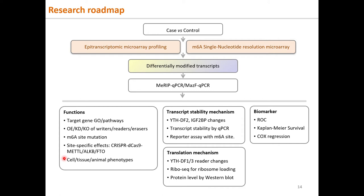For M6A molecular mechanism study, transcript RNA stabilization can be studied by changes in YTHDF2 decay reader or IGF2BP stabilization reader using qPCR or reporter assays as measurements. Translation regulation mechanism can be studied by YTHDF1 or EIF perturbation, ribosome profiling for ribosome loading, and western blot. M6A as biomarkers can be studied by diagnostic ROC curves, Kaplan-Meier survival, or Cox regression for prognostic biomarkers.